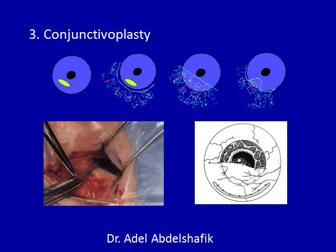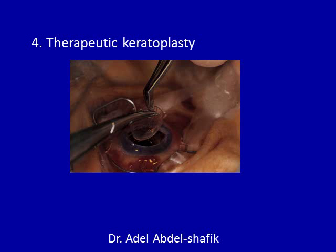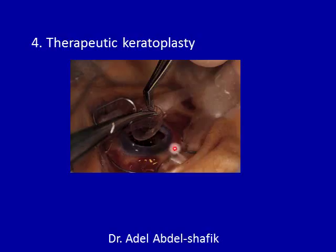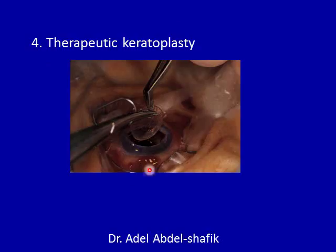Sometimes there is no response, then we can do keratoplasty. In keratoplasty, we take the cornea with all its infection out, and we can even wash the anterior chamber if there is hypopyon in the AC. Then we put in a new cornea — this is termed therapeutic keratoplasty because the goal is to clear up the infection. However, doing keratoplasty at the time of inflammation carries a very high risk of graft rejection.